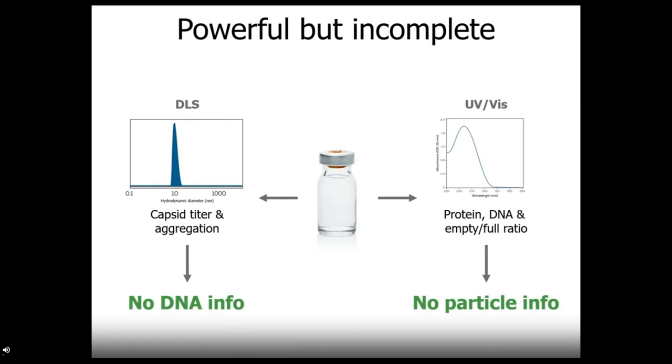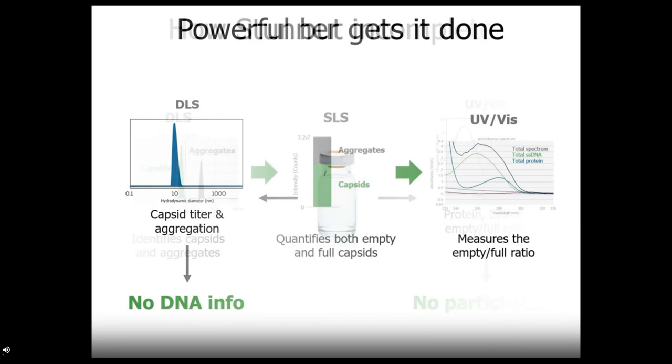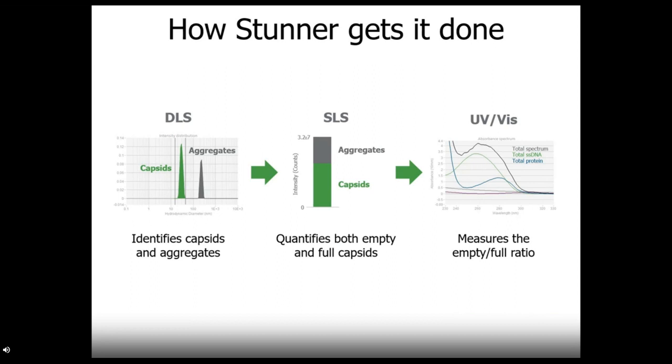So let's focus in on two technologies, DLS and UV-Vis. Each of them tells a part of the story. DLS gets you info on capsid titer and aggregation, but can't say anything about what's happening with DNA. On the other hand, UV-Vis gets you total amounts of protein, DNA, and can link those to empty full ratios. But it doesn't give you info about if any of this is actually contained in capsids. So each technique gets you valuable info, but neither tells you everything. So what if you could combine them to get a whole story? And that is exactly what Stunner does. And it's shown step by step here. First, DLS identifies the capsids, the aggregates, and how intense the signal is from each of those populations. In the middle, that info then helps you split up your SLS signal from a total into the amount just attributable to empty and full capsids combined. And finally, UV-Vis brings in that info about empty full ratio plus protein and DNA totals to provide the last piece of the puzzle.